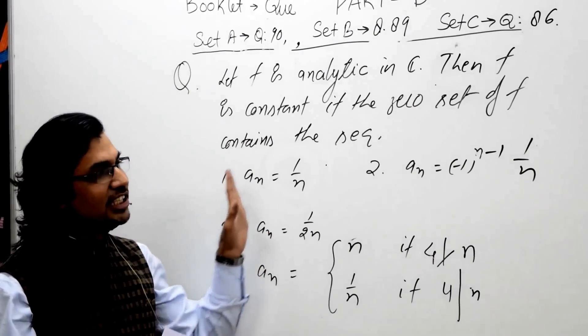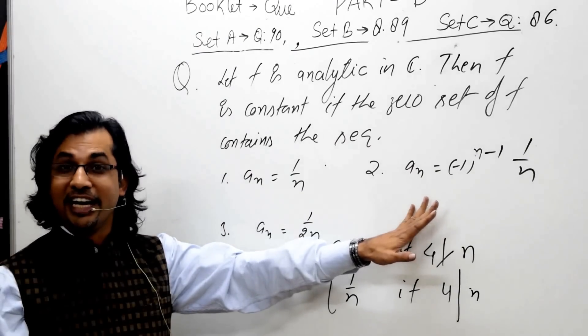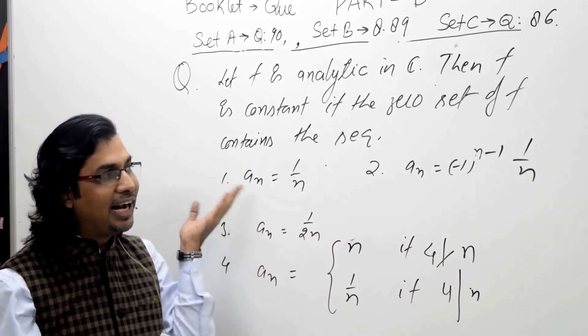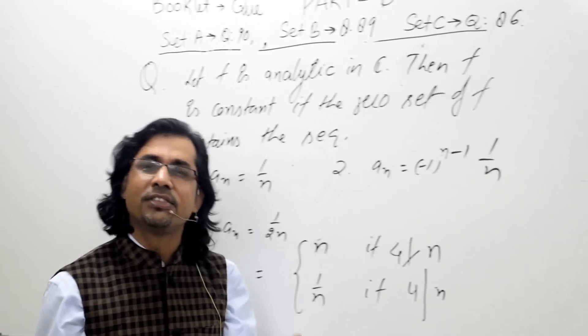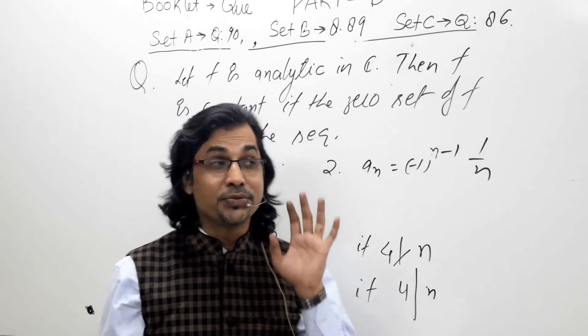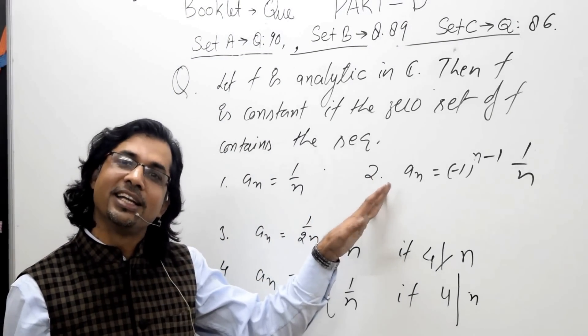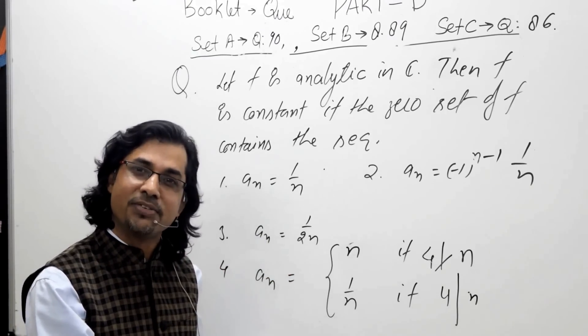If you can claim these sequences have limit points in C, that they are either convergent or they have convergent subsequences, since the function is 0 on these sequences, it implies it is 0 on its subsequences as well.